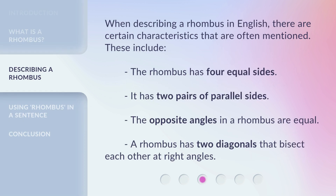When describing a rhombus in English, there are certain characteristics that are often mentioned. These include: the rhombus has four equal sides; it has two pairs of parallel sides; the opposite angles in a rhombus are equal; and a rhombus has two diagonals that bisect each other at right angles.